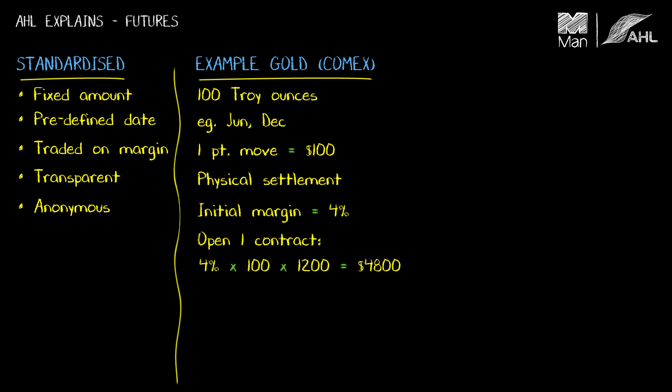Let's assume I've bought the contract at $1,200 and posted my initial margin. At the end of that day, the price has jumped up to $1,202. I was long the contract and it's gone up in value — the value has increased by two points multiplied by the $100 dollar value per point move, which is $200. That variation margin would be money I receive in my margin account, so I'd make a profit.